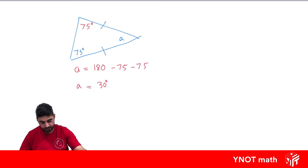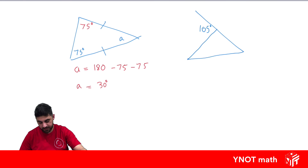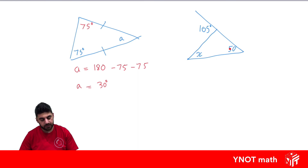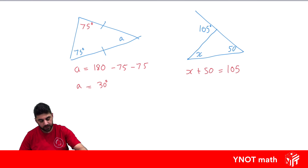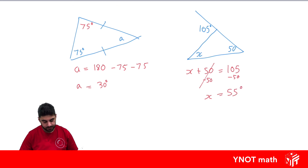In the final example, we have a triangle with one side extended. The exterior angle is 105 degrees, one interior angle is 50 degrees, and we solve for x. Using the property that the exterior angle equals the sum of the two opposite interior angles: x plus 50 equals 105. Subtracting 50 from both sides gives x equals 55 degrees.